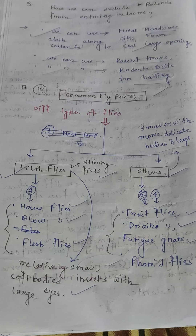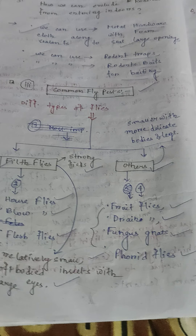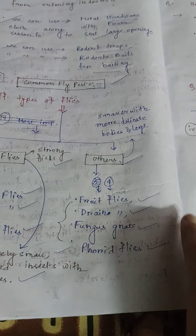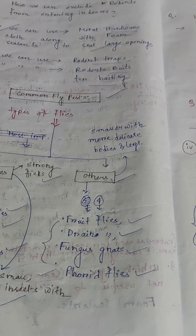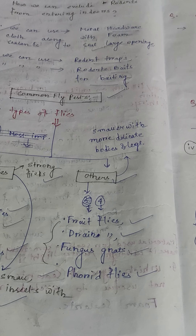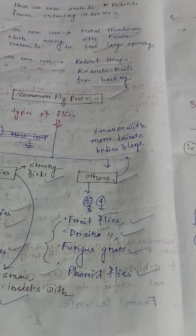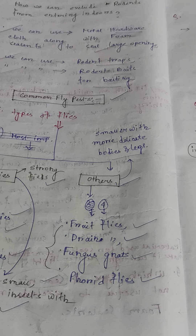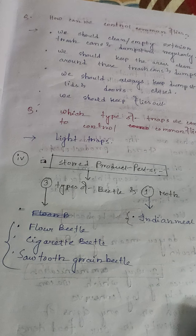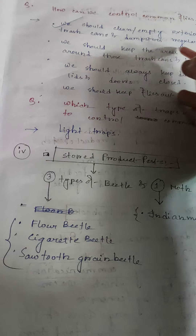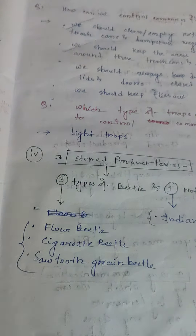Rodents' nests should be kept outdoors. Outdoors, rodents' nests are hidden within tall grass, landscaping, clutter, or down in sewers. Sewers are underground conduits that carry off drainage water. Clutter means a cover or fill with an untidy collection of things.